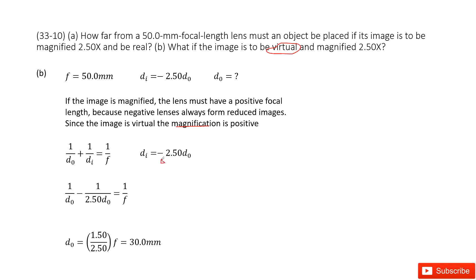So there we must have a negative sign. So dI equal to negative 2.5 d0. Similarly, we replace dI in this same lens equation and solve this equation for d0. We input all the given quantities and get the answer there. Thank you.